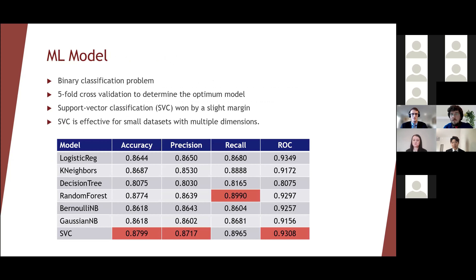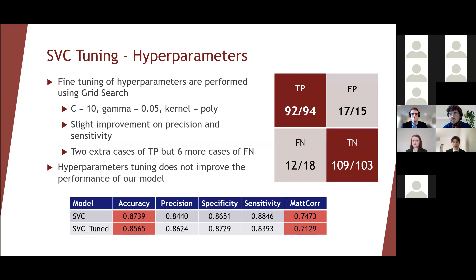The predicting outcome is either 1 or 0, meaning you have heart disease or you don't — hence it's a binary classification problem. We tested the performance of seven different models suitable for classification using a method called five-fold cross-validation. The scoring metrics are shown in the table below, and the scores are very close. But since a support vector classifier, or SVC, has the highest average score and is suitable for a small data set with multiple dimensions, we decided to adopt SVC as our ML model. In attempts to improve performance, we tuned the hyperparameters using a method called grid search. Although tuning slightly increases precision and sensitivity, it negatively affects accuracy and the Matthews correlation coefficient, which measures the quality of our prediction. From the confusion matrix on the right, although the tuned model has two extra cases of true positive, its benefits are outweighed by the six extra cases of false negative. Therefore, we decided that the model should be kept untuned.